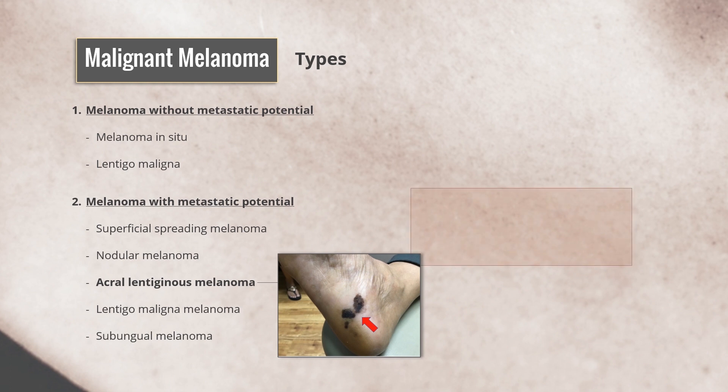Acral lentiginous melanoma is more common in dark-skinned people and is confined to the palms, soles, and nails.